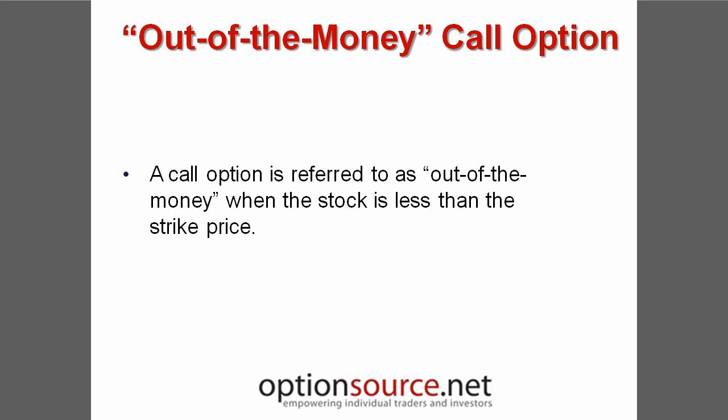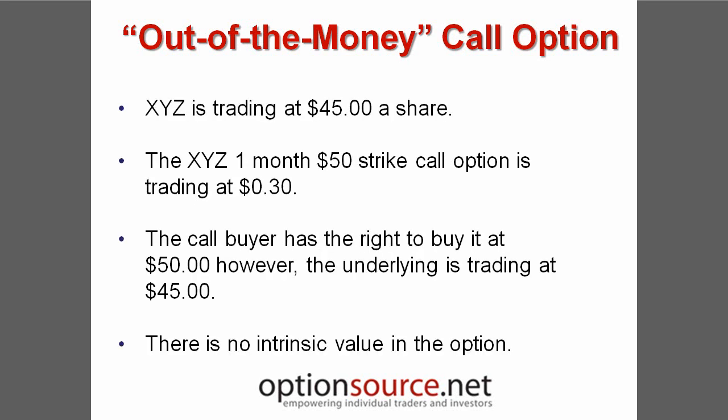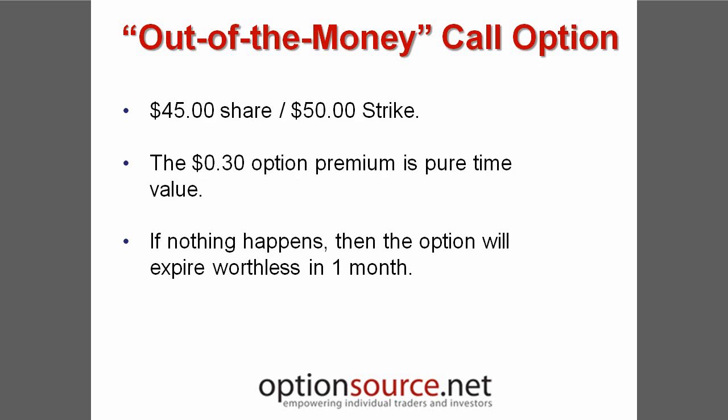A call option is referred to as being out of the money when the stock is less than the strike price. For example, with shares of an underlying security trading at $45 per share, an XYZ one-month call option with a $50 strike might be trading at $0.30. By purchasing the call option, the option holder has the right to buy the shares of the underlying security at $50. Since the stock is currently trading at $45, this option is considered to be out of the money and has no intrinsic value. With the share price of $45, the $50 strike option is made up entirely of time premium.